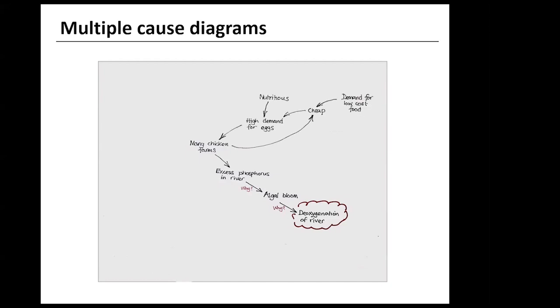We keep on asking why. So one reason for there being many chicken farms is the high demand for eggs. Why is this? Well, they're nutritious and cheap. And they're cheap because there is a demand for low-cost food. Then we note that one reason why eggs are cheap is because there are many chicken farms. So we have a feedback loop.